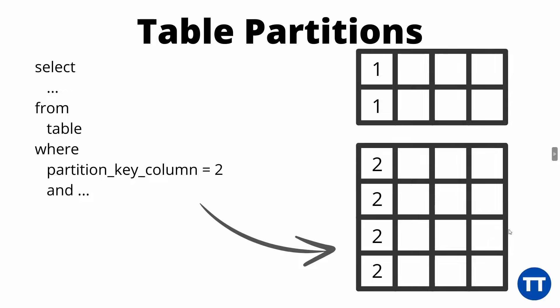So it will go only to that partition and will only scan the records in that partition. It will not touch the records in any other partition. This improves query speed. I already made the reference to indexes because these two topics are often brought up together — both can improve query speed. The general rule is: use indexes if you want to retrieve very few records, use partitions if you want to retrieve more records.